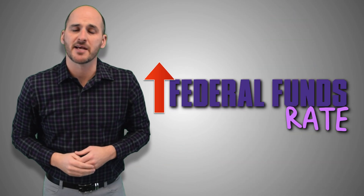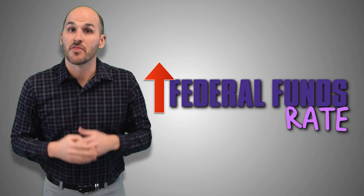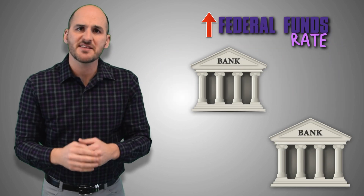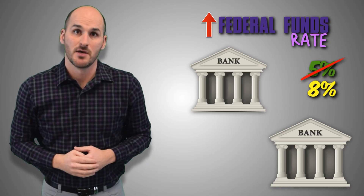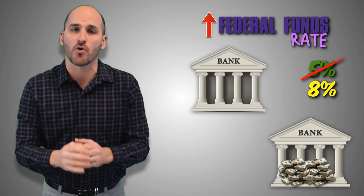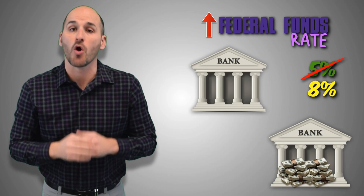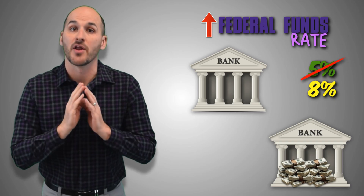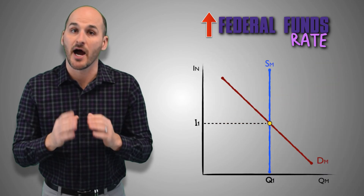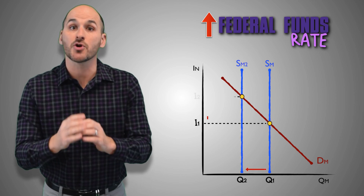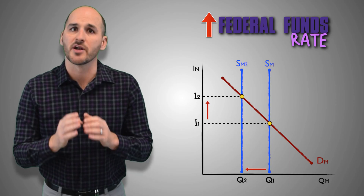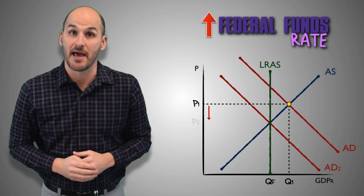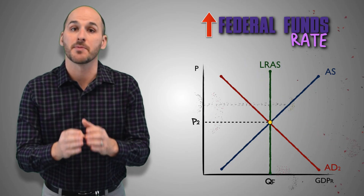Increasing the federal funds rate makes lending between banks more expensive, which means banks borrow lesser sums from each other. The Fed commonly increases the federal funds rate by taking money out of the economy through the selling of bonds in the open market. For example, if the Fed sells bonds and increases the federal funds rate from 5% to 8%, then banks will pay 3% more in interest on every dollar that they borrow from each other. This means that they will pay back more to each other over the life of their loans, and they can't keep as much of the interest that they charge us when we borrow from them, meaning that they will earn less profit on every loan that they issue. As banks borrow less money at a higher federal funds rate, the money supply decreases, leading to an increase in the nominal interest rate in the money market. This decrease in investment spending will decrease aggregate demand, which will cause real GDP contraction and return the economy to full employment.